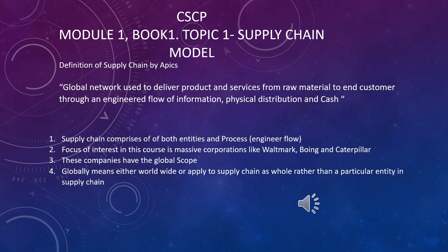Let's go into a little detail of this definition. Supply Chain comprises both entities and processes. Entities — for example, the customer is an entity, the supplier is an entity, the manufacturer is an entity. All these entities need to constitute a Supply Chain.